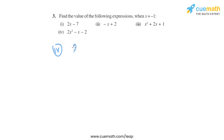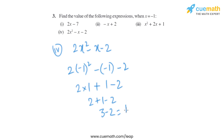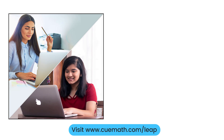In the fourth part, the expression given is 2x² minus x minus 2. Putting x equals minus 1, it becomes 2 into minus 1 squared, minus minus 1, minus 2. Minus 1 squared becomes plus 1, so it becomes 2 into 1, and minus minus becomes plus, giving 2 plus 1 minus 2, which equals 3 minus 2, which is 1.